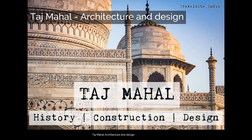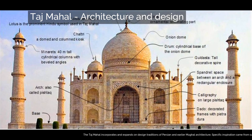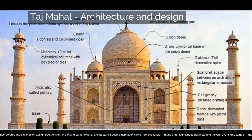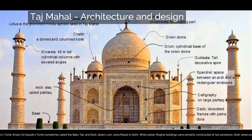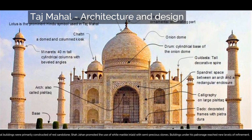The Taj Mahal incorporates and expands on design traditions of Persian and earlier Mughal architecture. Specific inspiration came from successful Timurid and Mughal buildings including the Gur-e-Amir, the tomb of Timur, progenitor of the Mughal dynasty, in Samarkand, Humayun's tomb, Itmad-ud-Daulah's tomb — sometimes called the Baby Taj — and Shah Jahan's own Jama Masjid in Delhi. While earlier Mughal buildings were primarily constructed of red sandstone, Shah Jahan promoted the use of white marble inlaid with semi-precious stones. Buildings under his patronage reached new levels of refinement.